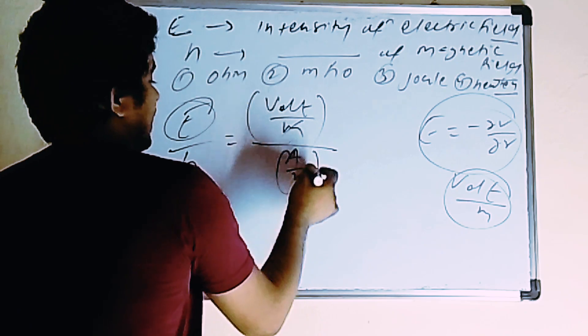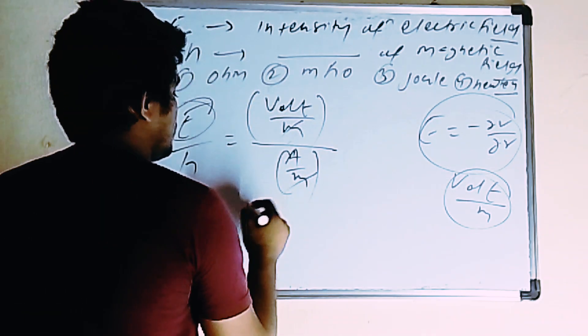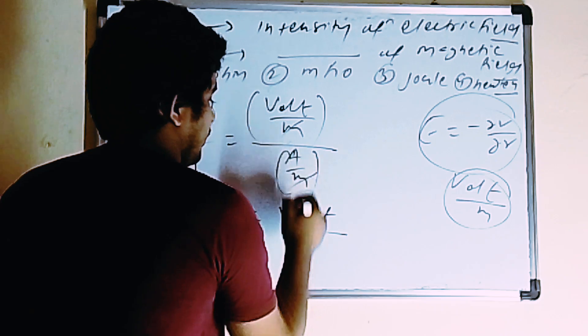So if you say M, M directly cancel out. So what is this? Volt divided by ampere.